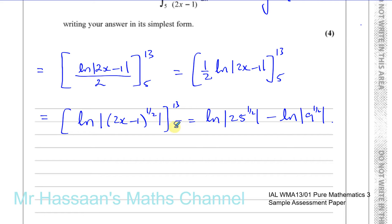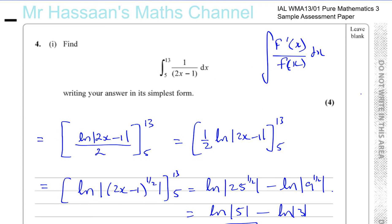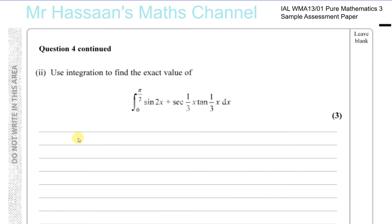The square root of 25 is 5, so we have ln(5). The square root of 9 is 3, so we subtract ln(3). Using the division law for logarithms, this gives ln(5/3). We don't need the modulus signs because both 5 and 3 are positive. So the answer in simplest form is ln(5/3). That was using the reverse of the chain rule — some people memorize the form directly, but it's good to understand it in terms of the chain rule.